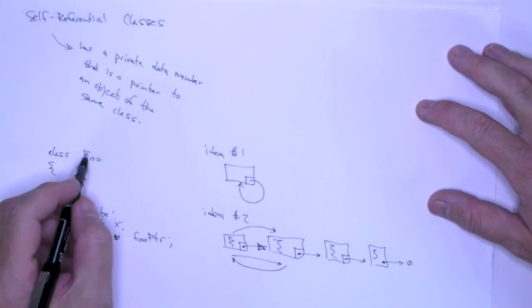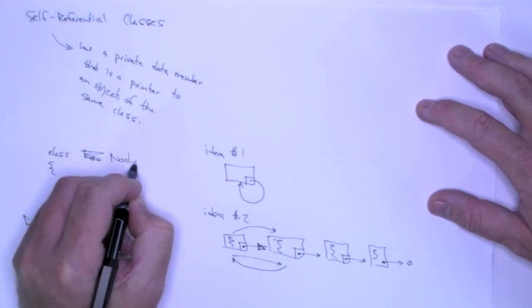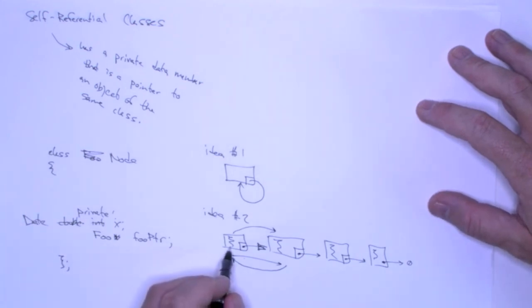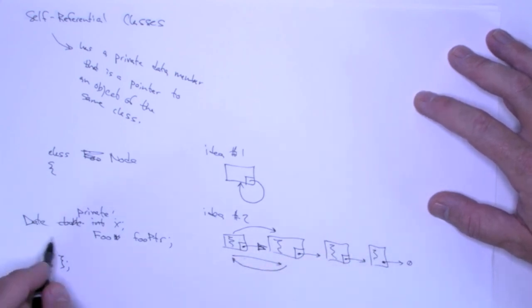So we don't really call this foo. What we call it is we call it node. We construct these chains or linked structures, and each element of the linked structure is called a node.